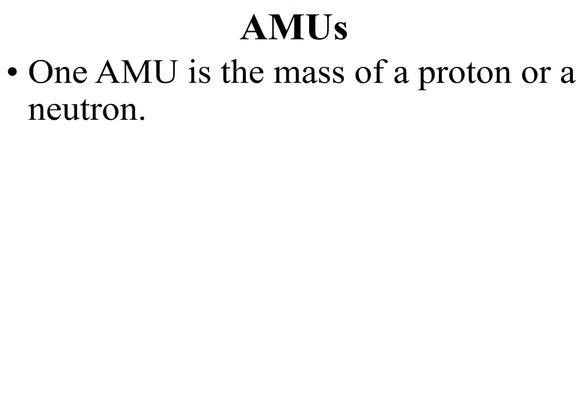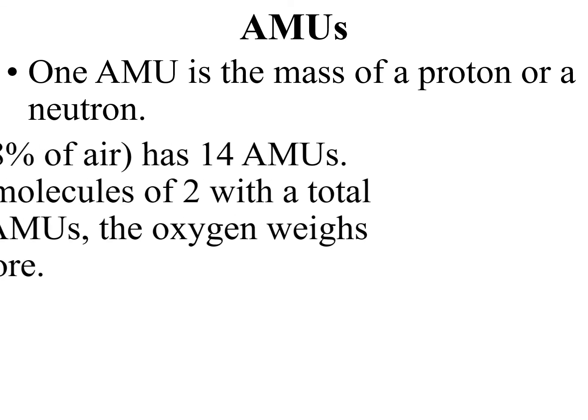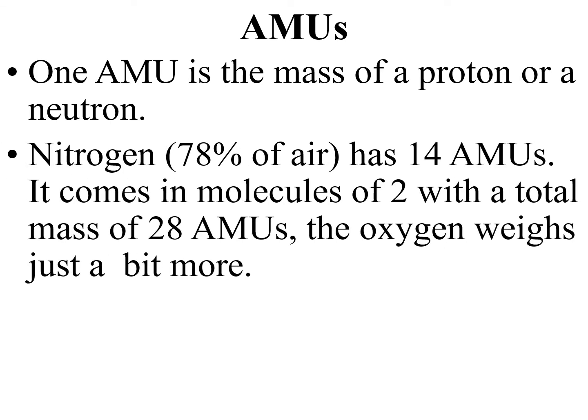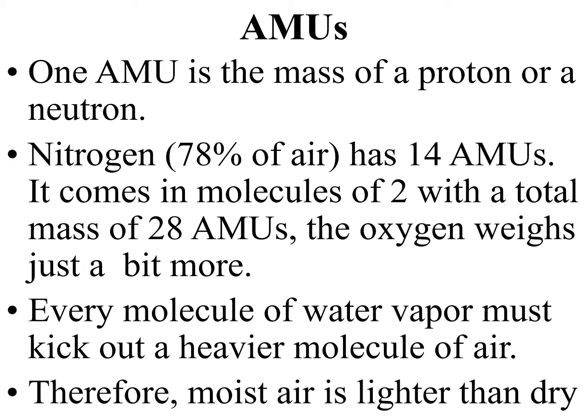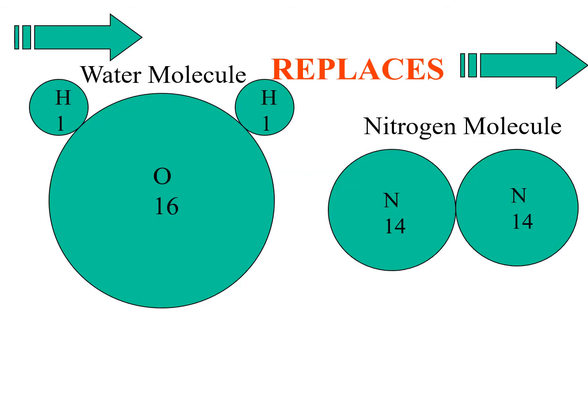An AMU is an atomic mass unit — the mass of a proton or a neutron. Nitrogen has 14 AMUs and comes in molecules of two, with a total mass of 28 AMUs per molecule. Oxygen with 16 AMUs per atom weighs 32 AMUs per molecule. If you average them out, it's about 29. So every molecule of water vapor must kick out a heavier molecule of air. Moist air is lighter than dry air. A water vapor molecule would equal 18 AMUs, whereas a nitrogen molecule would be 28 AMUs.